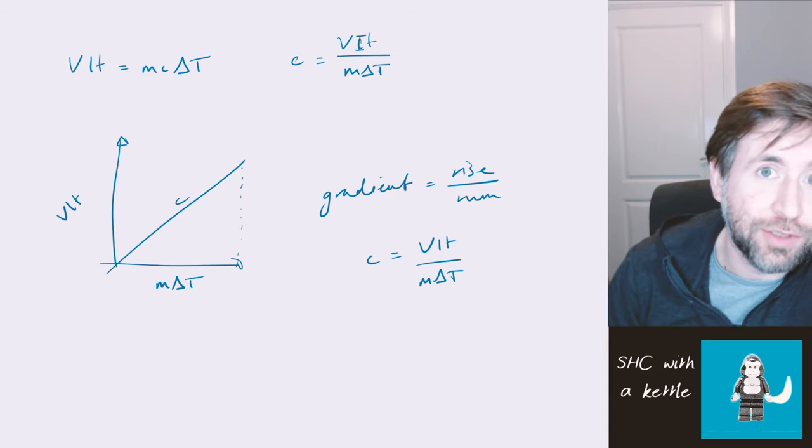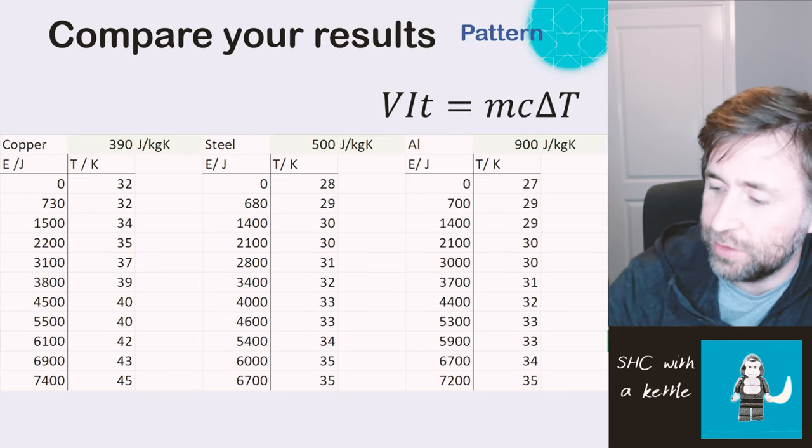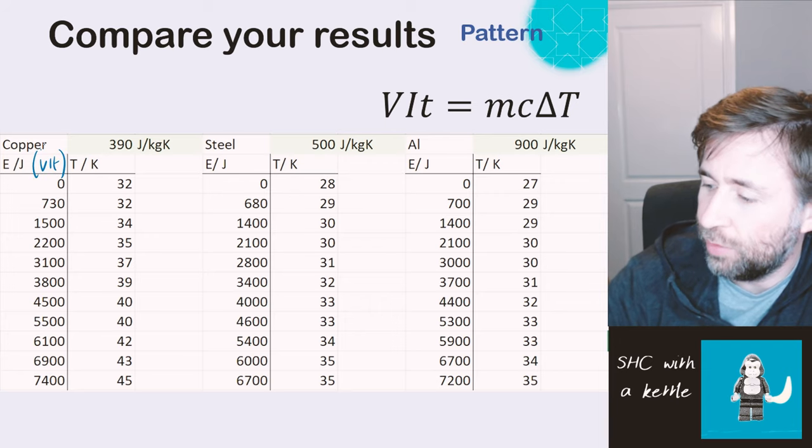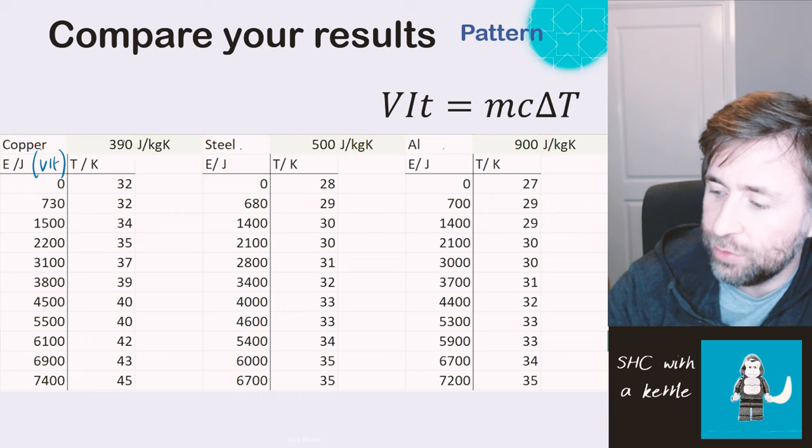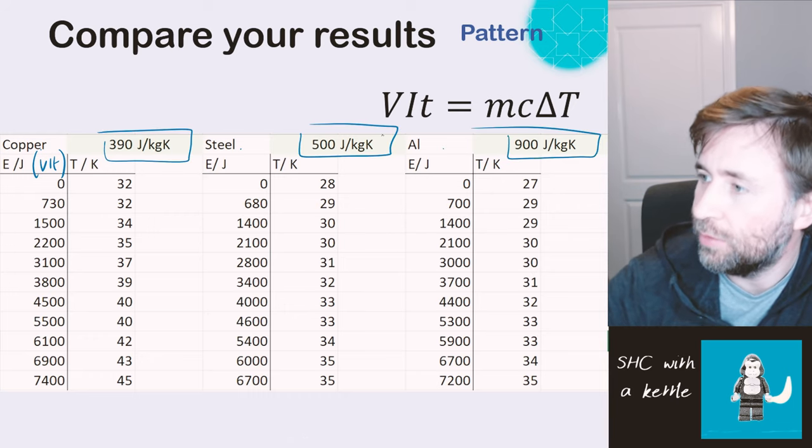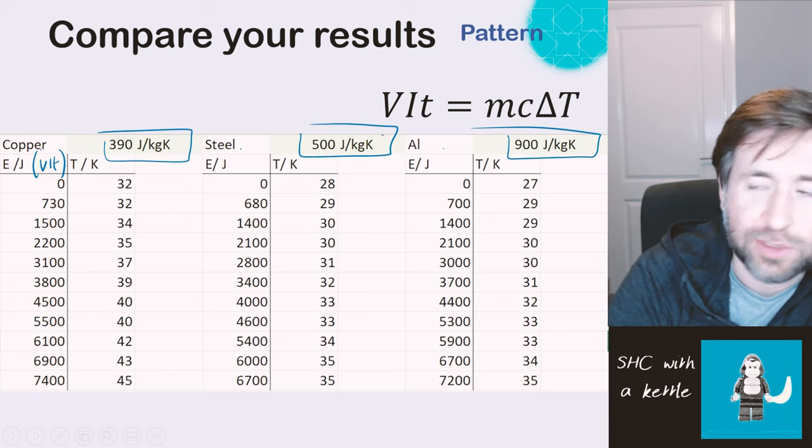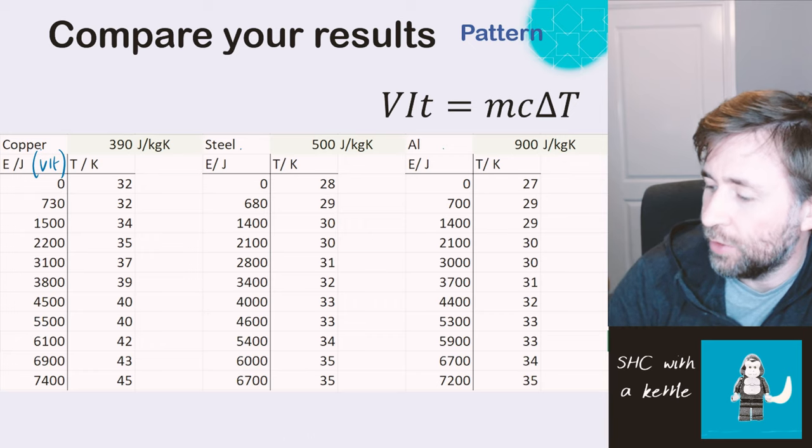Let's have a look how the results turned out on the graphs. Here's all three of them, and we've calculated the energy here. We've calculated VIT here for each of copper, steel, and aluminum. And I've also put in green here the true value. The value if you look it up in a book or a set of tables, what is the value of the specific heat capacity of those metals. I've put those into the table there so we can make a comparison in a moment.